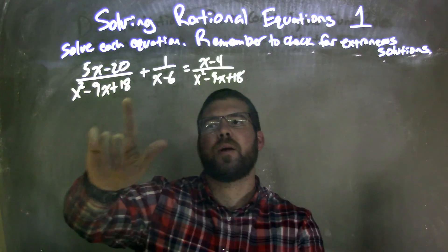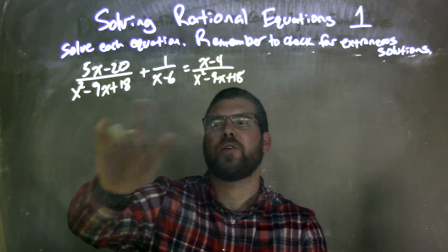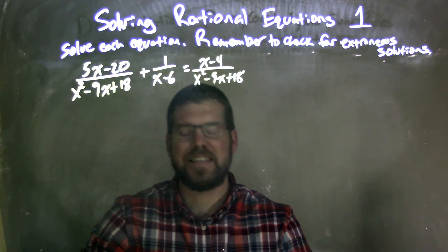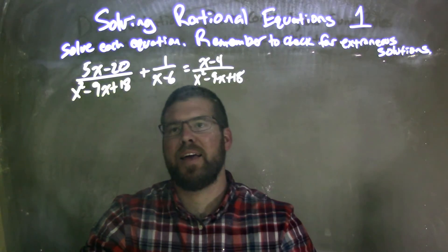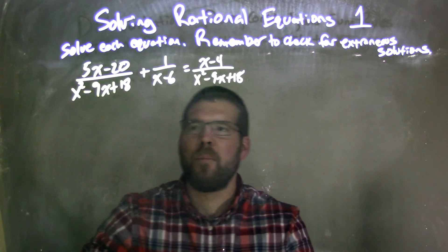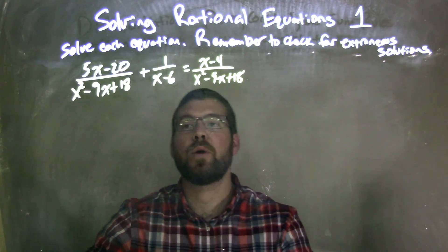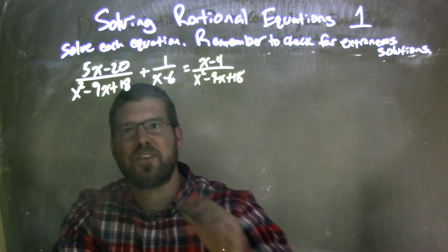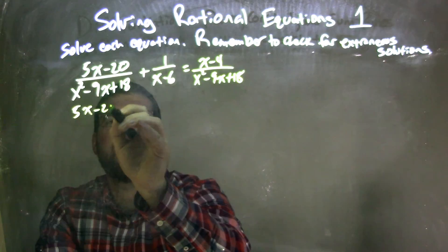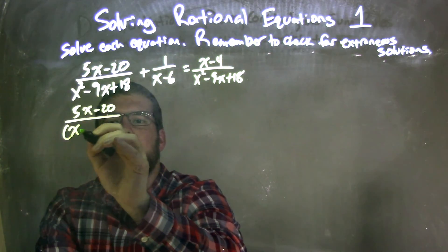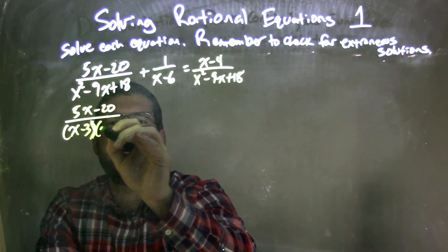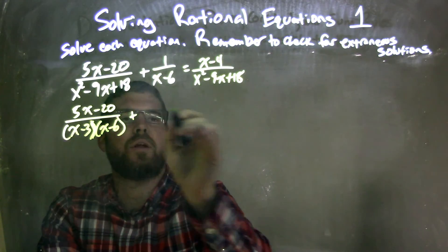First thing I'm going to think about is: can I factor x squared minus 9x plus 18? And I believe I can. The numbers that add to be negative 9 but multiply to be 18 are negative 3 and negative 6. So I'm going to rewrite this to be 5x minus 20 in the numerator, and then x minus 3 times x minus 6.